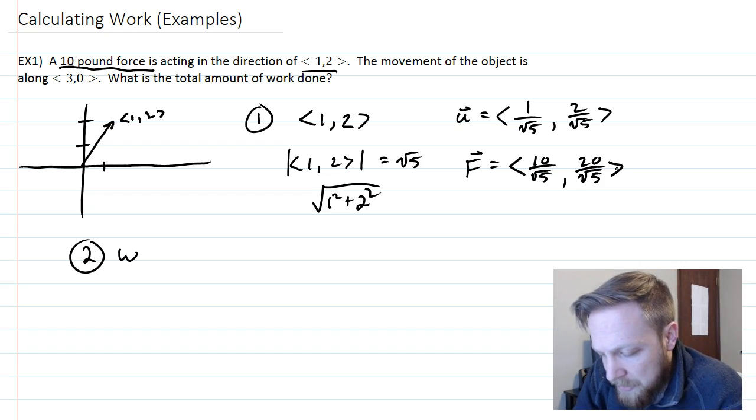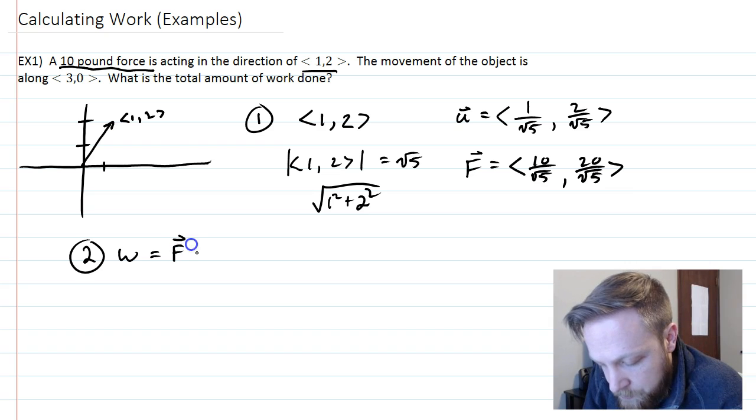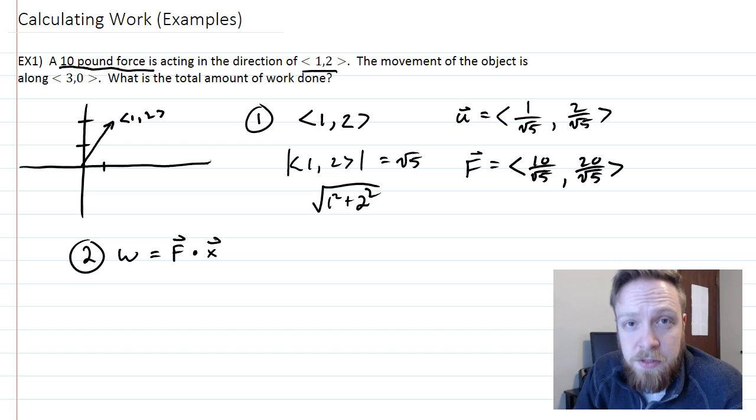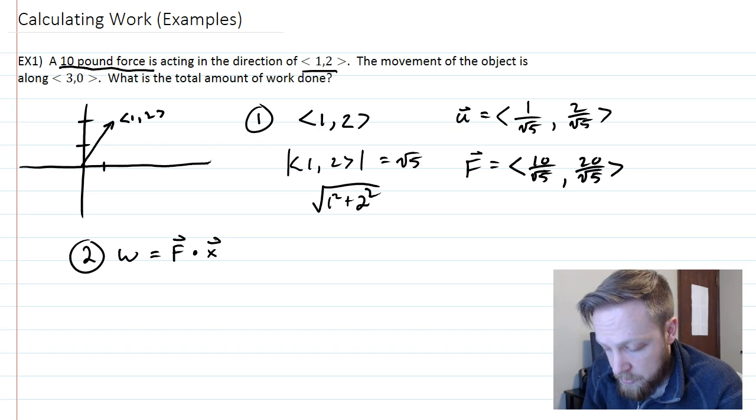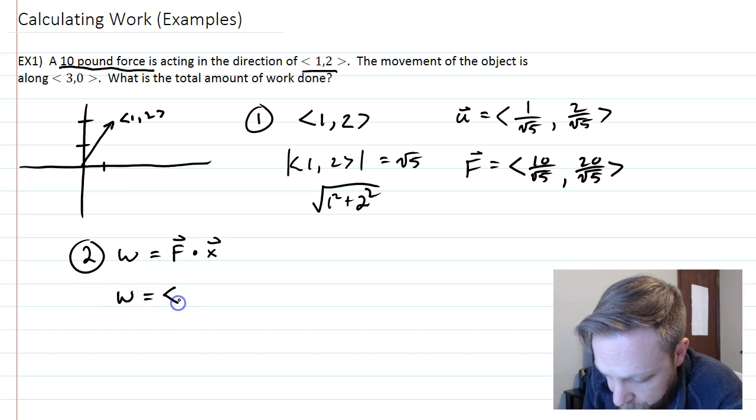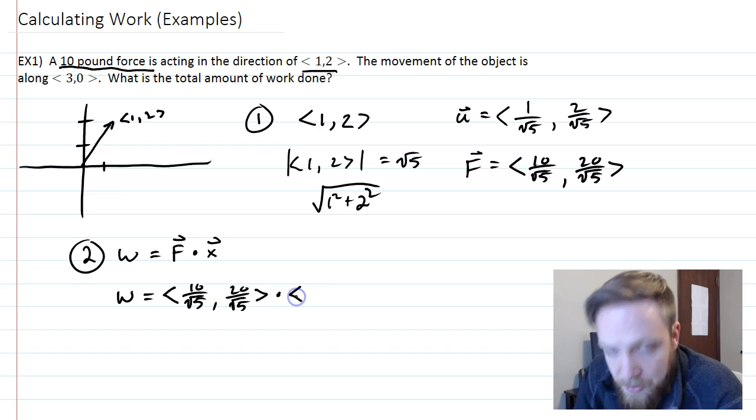There we go, if we checked that would have a magnitude of 10. So what I'm working for here is because they gave us two vectors, I'm going to use the dot product definition of work. So I'm going to do force dotted with my movement factor. My force is <10/√5, 20/√5> and I'm going to dot that with my movement, which is in this case <3,0>.